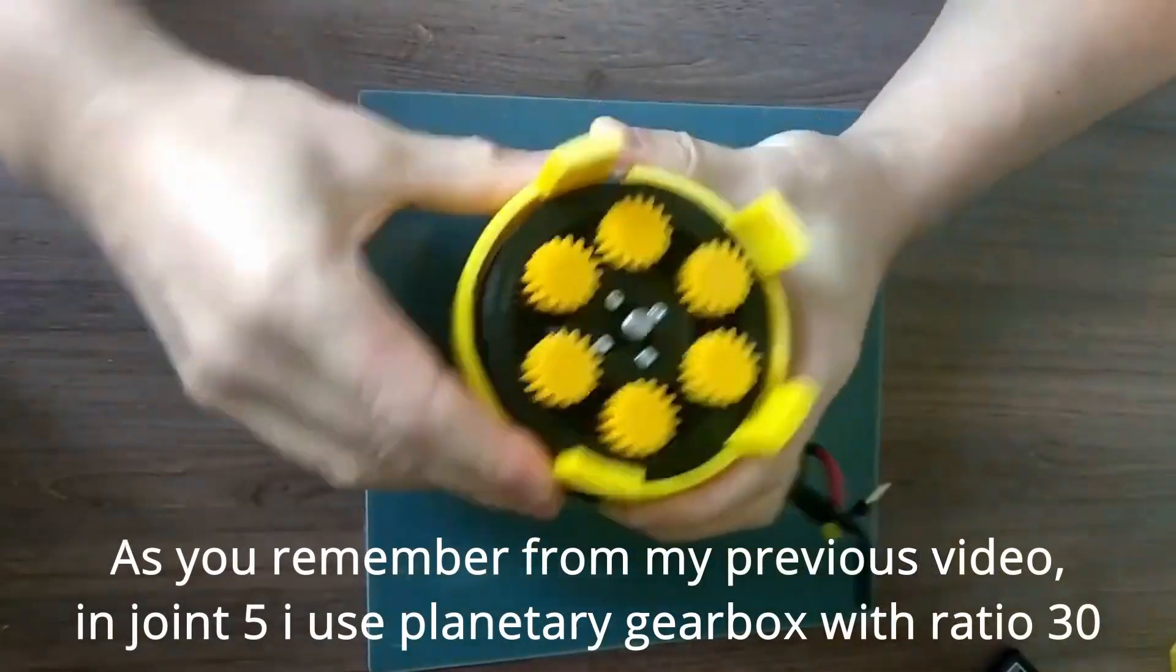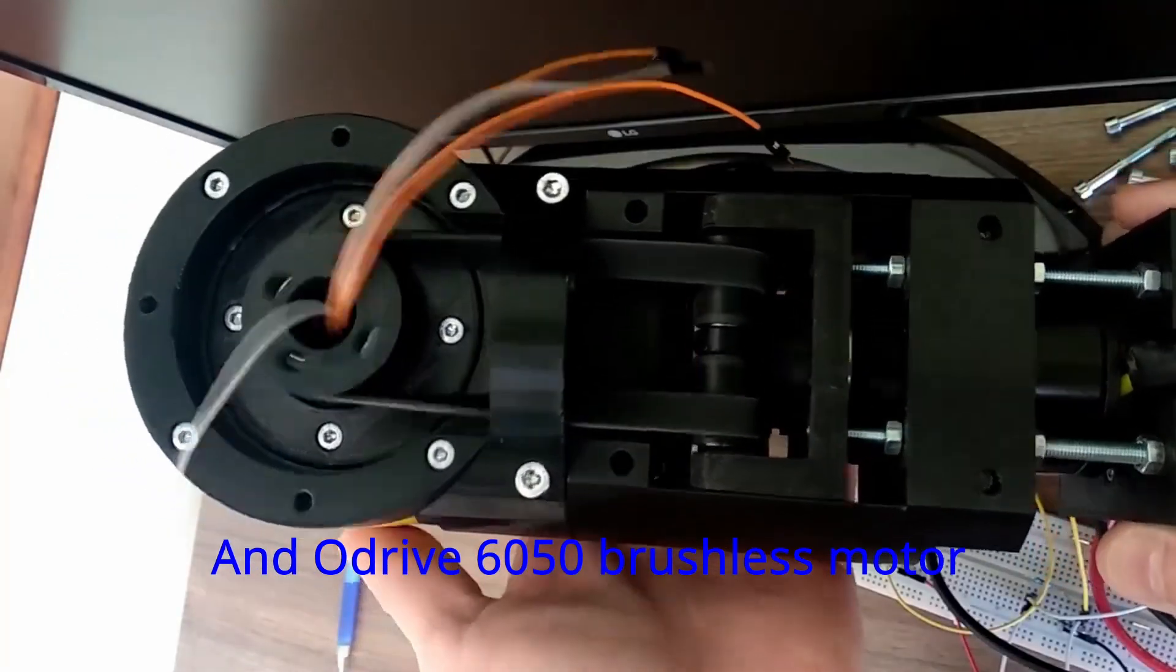As you remember from my previous video, in Joint 5 I used planetary gearbox with ratio 30 and a drive 60-50 brushless motor.